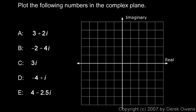Here we're told to plot the following numbers in the complex plane. And we're given five numbers here. Each one has a name: A, B, C, D, and E. And we're going to plot all of these.